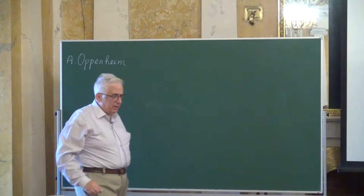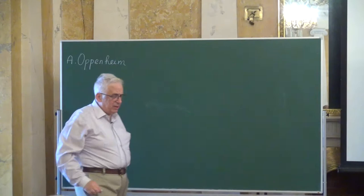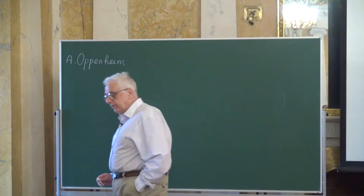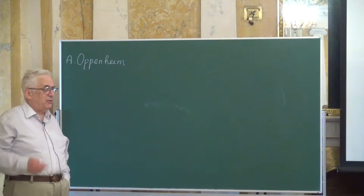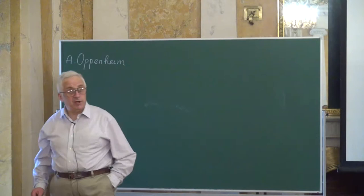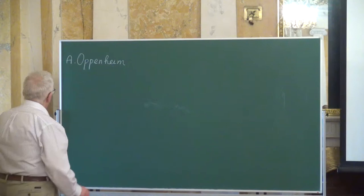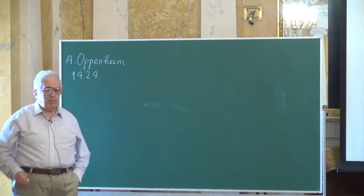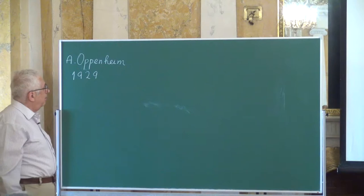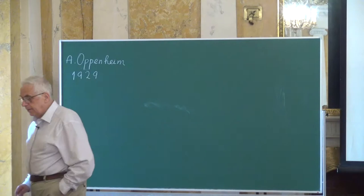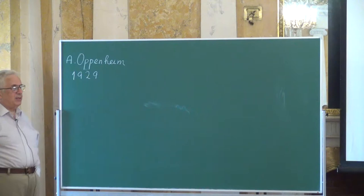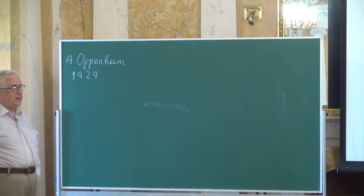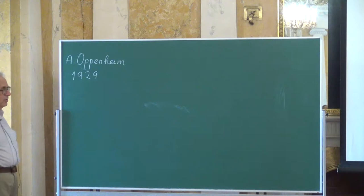That was Alexander Oppenheim. He was British. As an undergraduate he was a student of Hardy, and as a graduate student he was a student of Dixon at the University of Chicago. In 1929 he published a paper which was essentially his thesis in the Proceedings of the National Academy of Sciences. It was about what might now be considered the Markov spectrum for higher-dimensional quadratic forms.